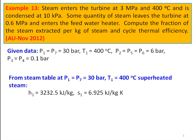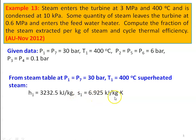The given data: P1 equal to P7 equal to 30 bar, T1 equal to 400 degree Celsius. P2 equal to P5 equal to P6 equal to 6 bar — that is the feed water heater pressure. Condenser pressure P3 equal to P4 equal to 0.1 bar. From the steam table at P1 equal to 30 bar and T1 equal to 400 degree Celsius, it is superheated steam at turbine entry. H1 equal to 3232.5 kilojoules per kilogram and entropy S1 equal to 6.925 kilojoules per kilogram Kelvin.